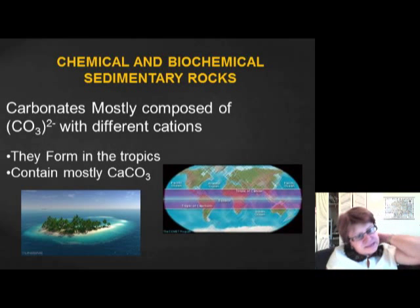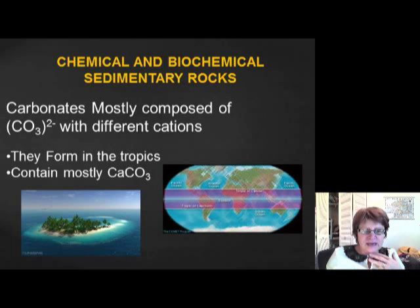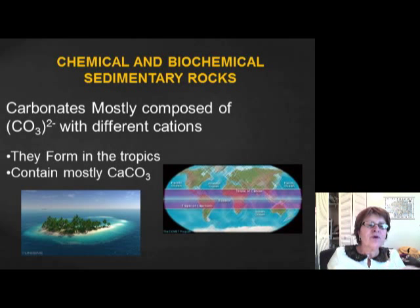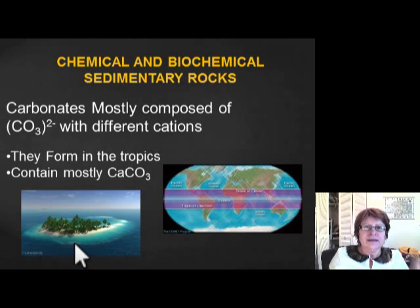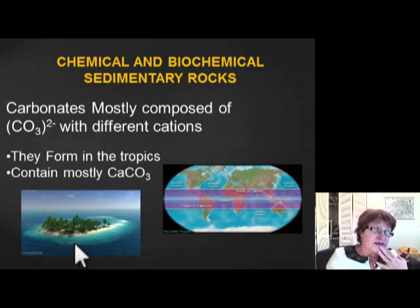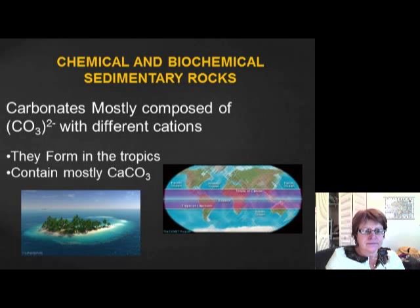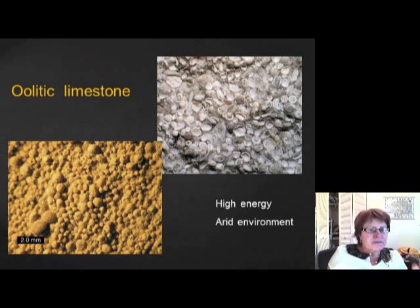Now we move to chemical or biochemical sedimentary rocks. This is the group where carbonates belong. Carbonates are chemical sedimentary rocks that precipitate out of the ocean mostly, and they all contain carbonate ions but can have different cations. Importantly, they mostly form in tropical areas — where you have carbonate formation, the water has a very characteristic blue color, like in the Caribbean.